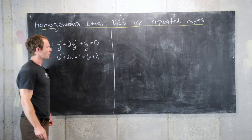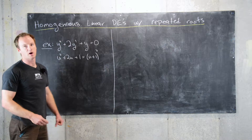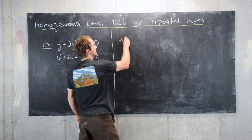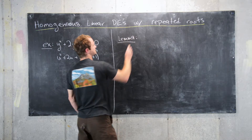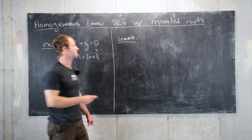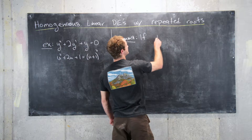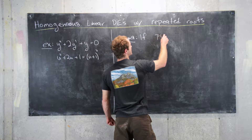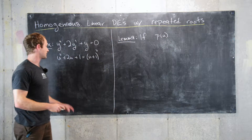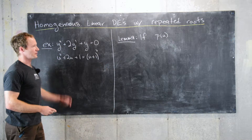In order to find a solution to these, we need one result to get us started. And we'll call this a lemma. And the lemma is as follows. If a polynomial p of u — I'll use u as the variable for the polynomial because that's what I use for the companion polynomial.